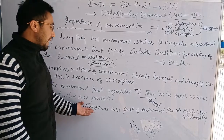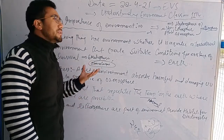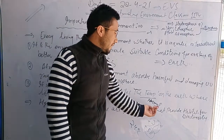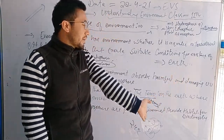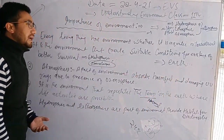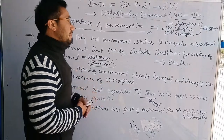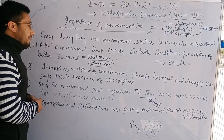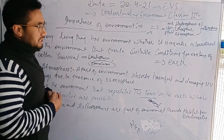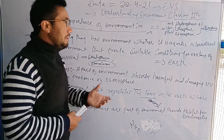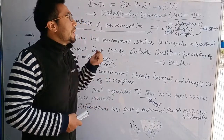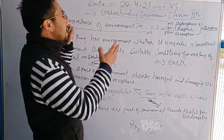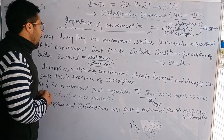The hydrosphere and lithosphere are important parts of the environment. The environment provides habitat for every form of biodiversity. Biodiversity means the variety of living beings — whether plant species or animal species — that are present here.